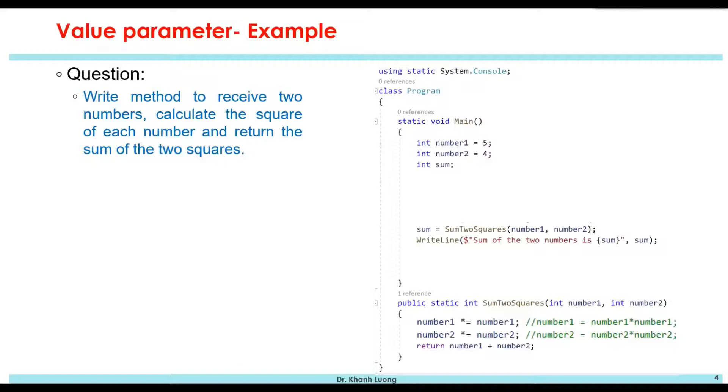So we will write the method like this. This method with the name sum2square has two parameters, number1 and number2. It has return type as well, and we choose the return type as int because it will return the sum of the two squares.